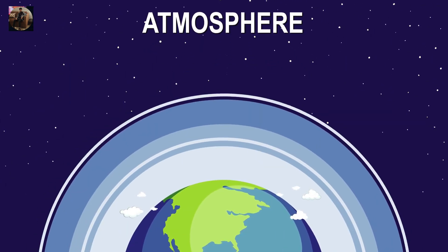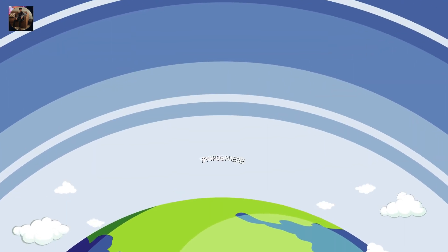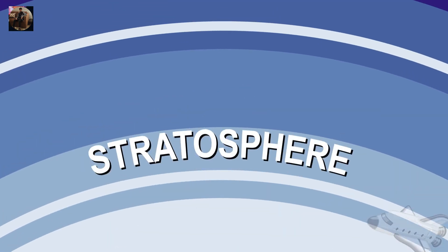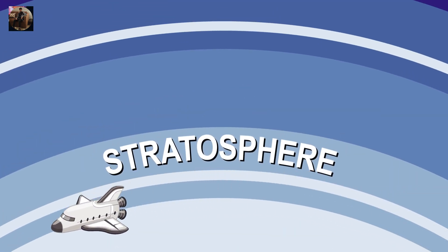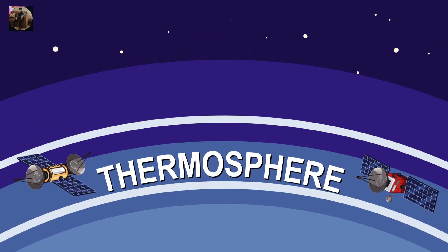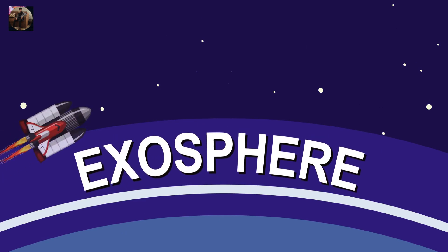But the atmosphere isn't just one uniform layer. It's divided into five distinct layers, each with its own unique characteristics. The troposphere is the layer closest to the Earth, extending about 8 to 15 kilometers above the surface. It's where all weather happens: clouds, rains, and even storms. This is also where we live and breathe.